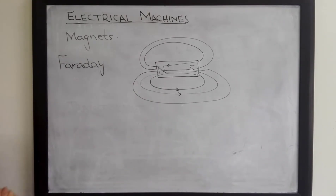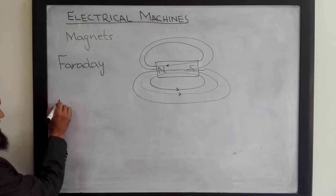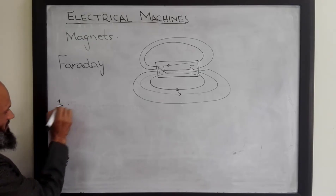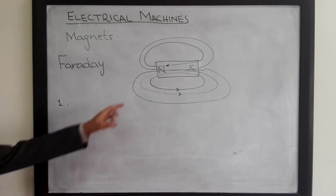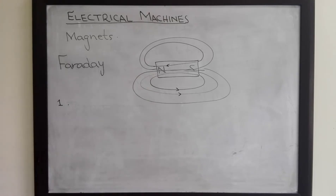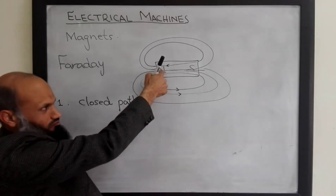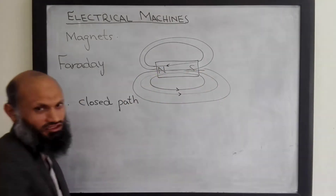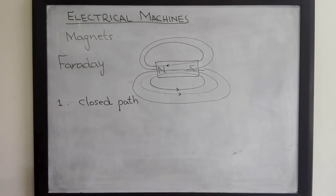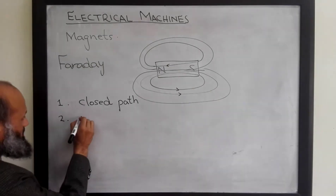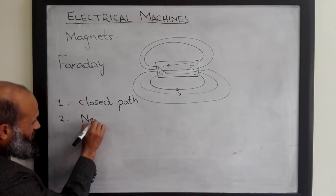These lines of flux satisfy a few properties. First, these lines of flux always follow a closed path — emerging from the north pole and entering into the south pole of the magnet. Second, these lines of flux never intersect each other.